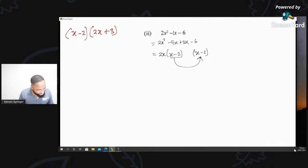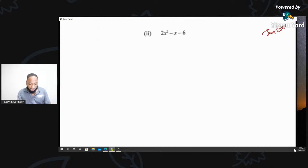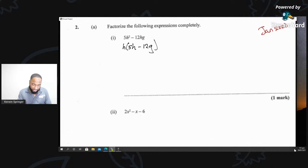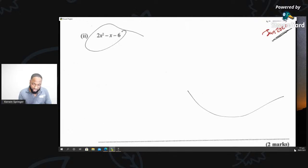Factorizing here, we'll put 2x(x - 2). Because if I multiply 2x by x, I get 2x². If I multiply 2x by negative 2, I get negative 4x. Once you get this, you put it back there immediately. Plus 3, so it's going to be (2x + 3)(x - 2). This is your final answer. You're going to get 2 marks and you roll out. That was 2020 Jan.